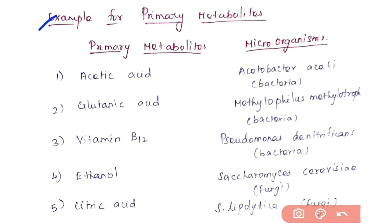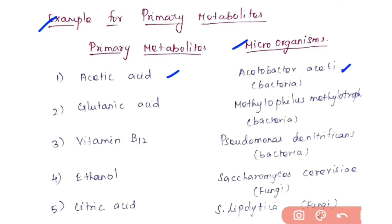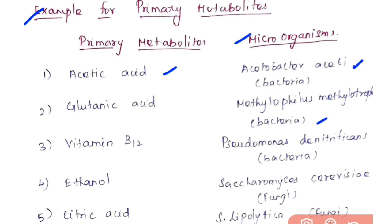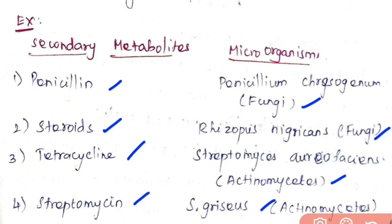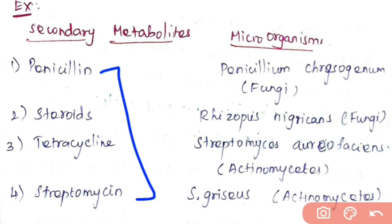Examples of primary metabolites and their producing organisms: Acetobacter aceti produces acetic acid; Methylophilus methylotrophus produces glutamic acid; Pseudomonas denitrificans produces vitamin B12; Saccharomyces cerevisiae produces ethanol; and Saccharomyces lipolytica produces citric acid. Examples of secondary metabolites: Penicillium chrysogenum produces penicillin; Chrysosporium nigricans produces steroids; Streptomyces aureofaciens produces tetracycline; and Streptomyces griseus produces streptomycin.